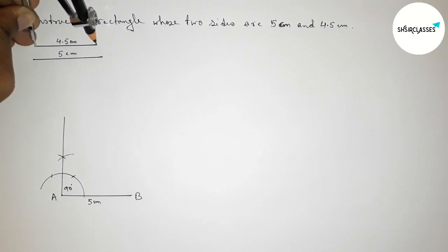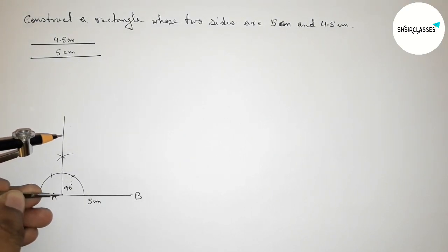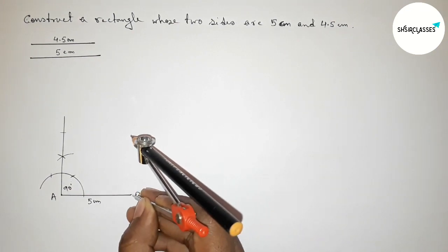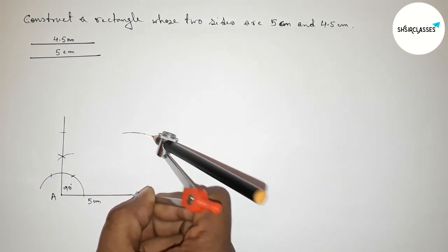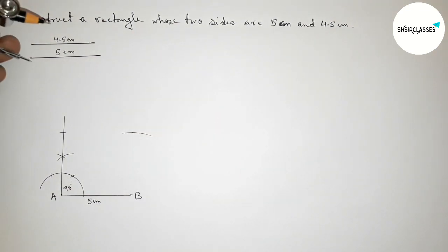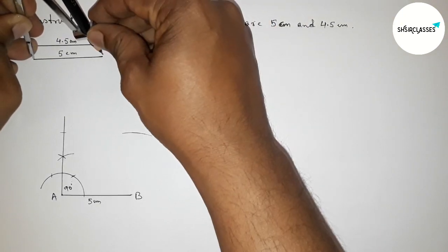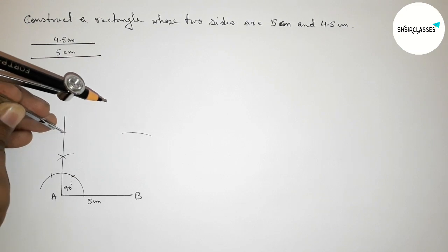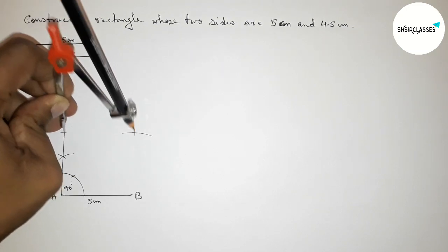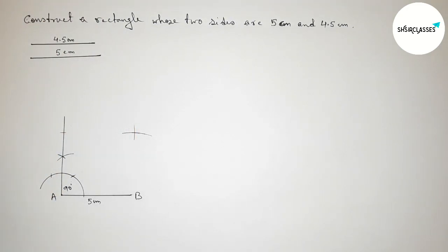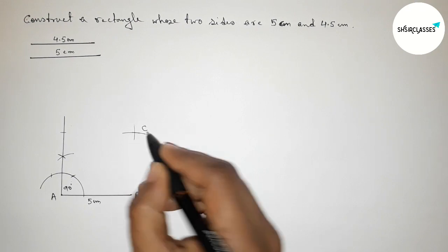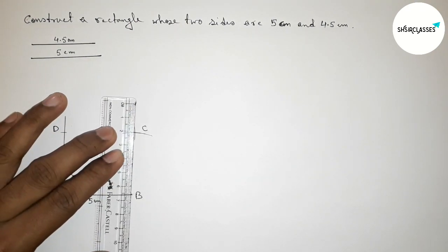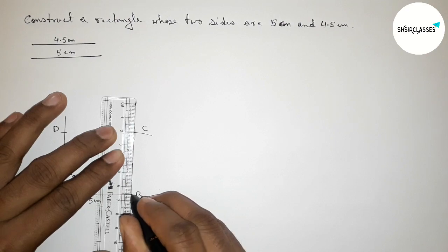Next, taking the length 4.5 centimeter with the compass and putting the compass on point A, cutting to mark the side. Then putting the compass on point B and drawing an arc. Now taking 5 centimeter length and putting the compass to cut the arc, marking point C and point D.